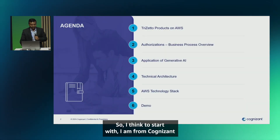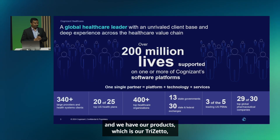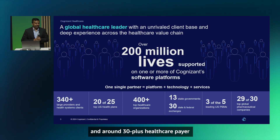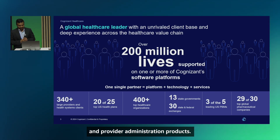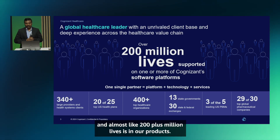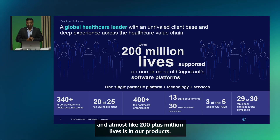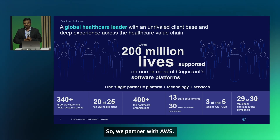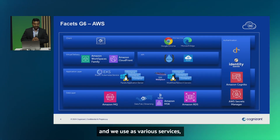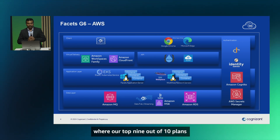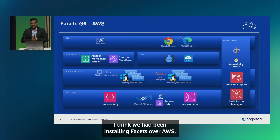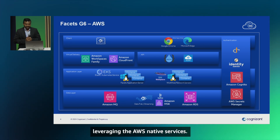I am from Cognizant and we have our products — our TriZo platform — which predominantly includes Facets, Qnext, and around 30-plus healthcare payer and provider administration products. It supports around 20 out of 25 plans and almost 200-plus million lives. We partner with AWS and install all our products on AWS, using various services. One key platform that 9 out of 10 top plans use is called Facets, and we have been installing Facets on AWS leveraging AWS native services.